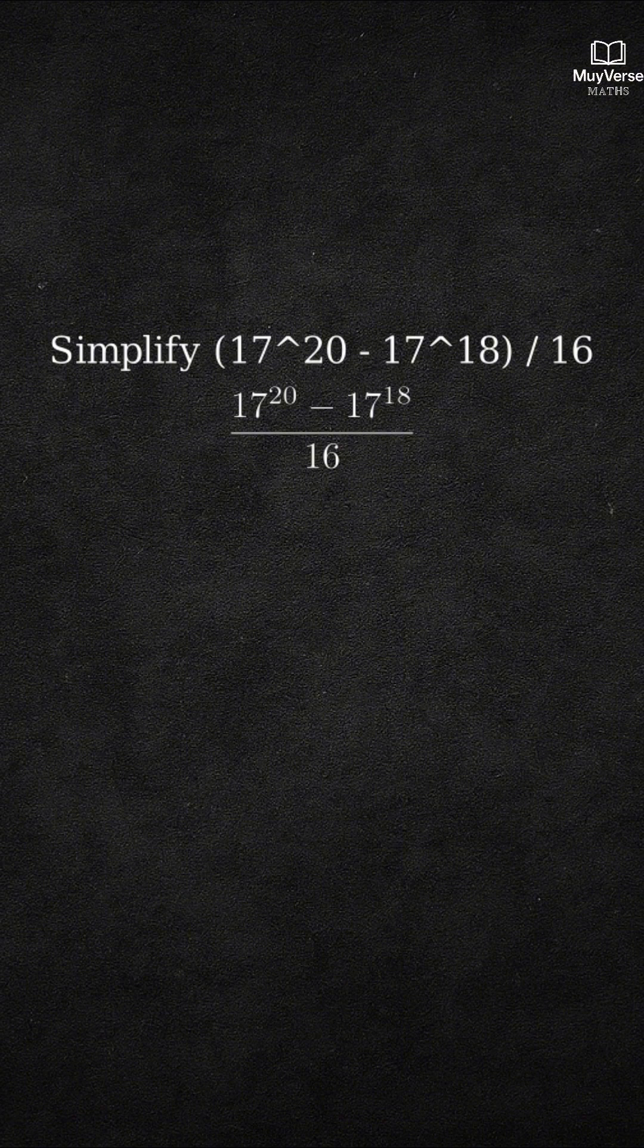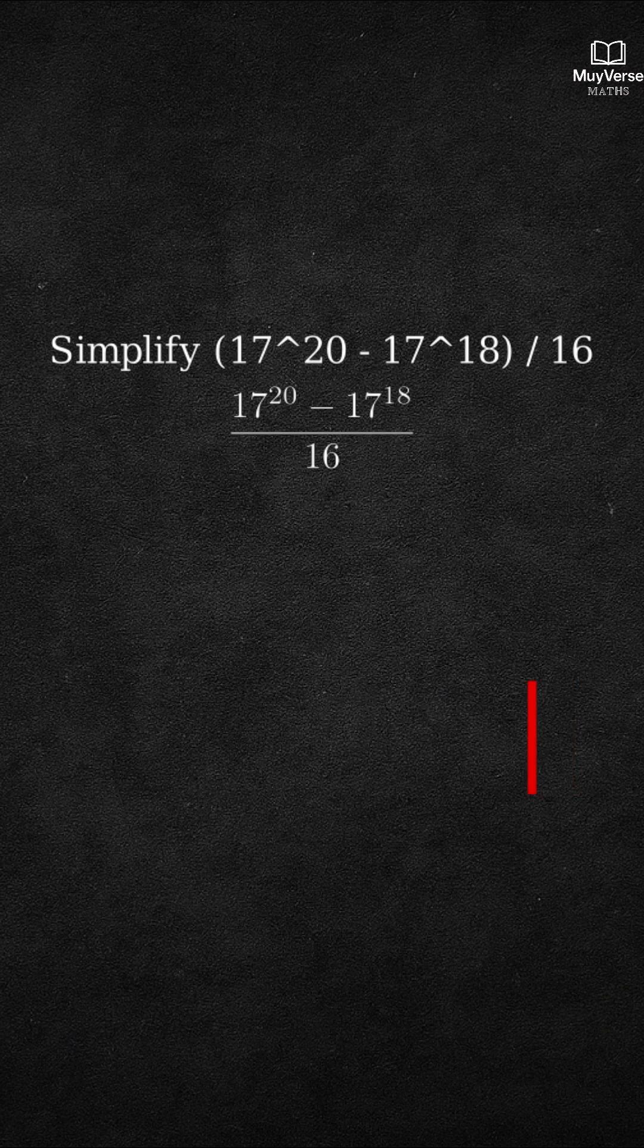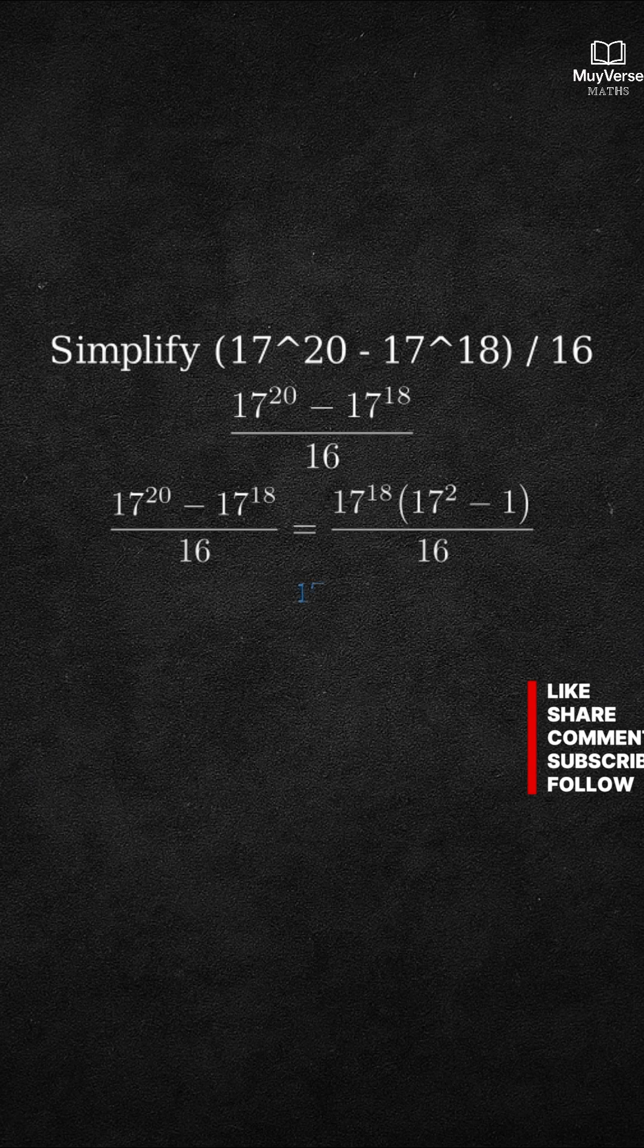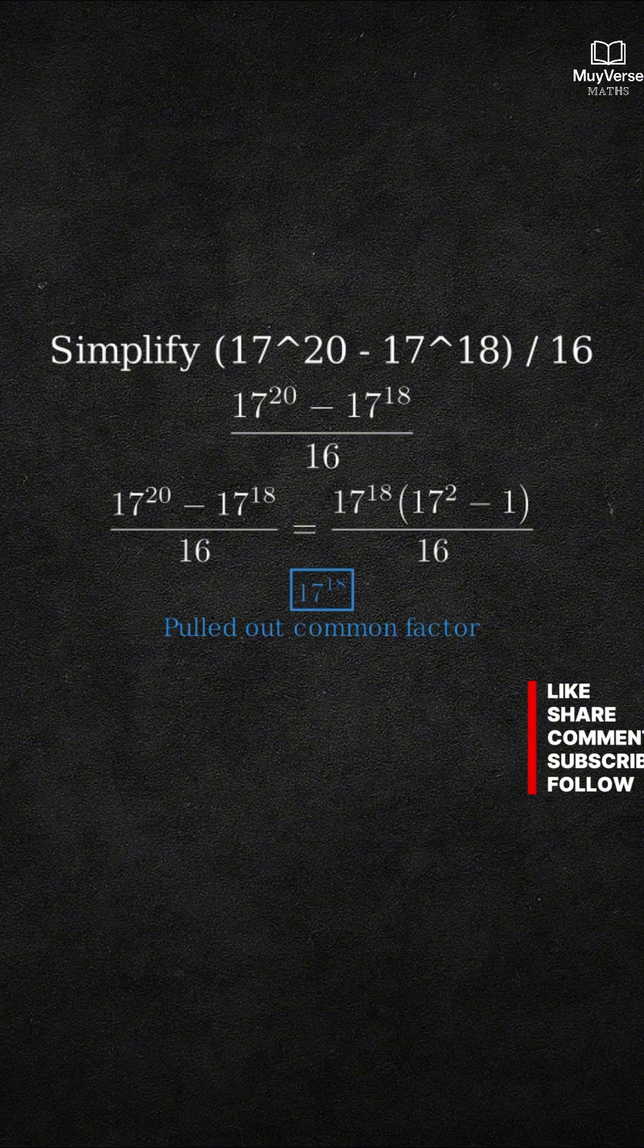Step 1. Factor out the smallest power of 17 from the numerator. Both terms share 17 to the 18th power. That gives us 17 to the 18th power times the quantity 17 squared minus 1 all over 16.